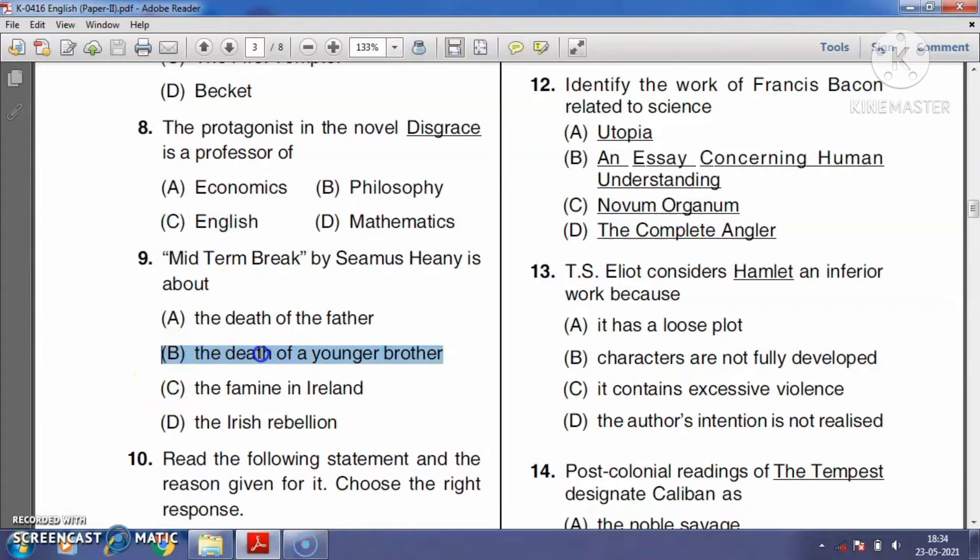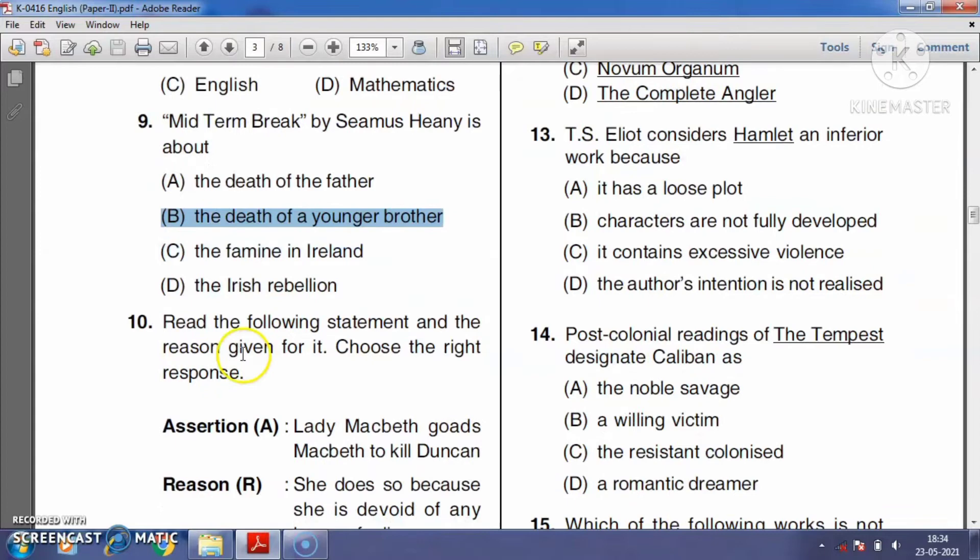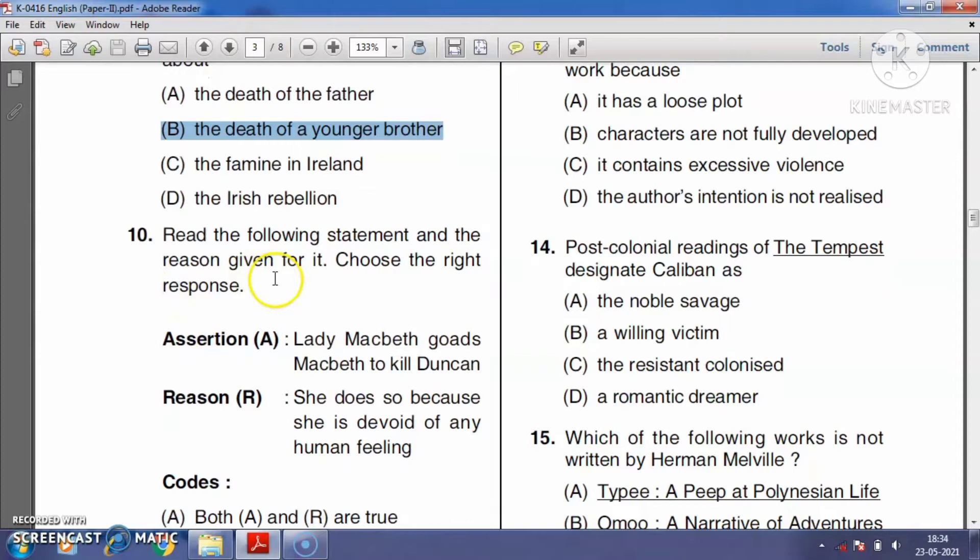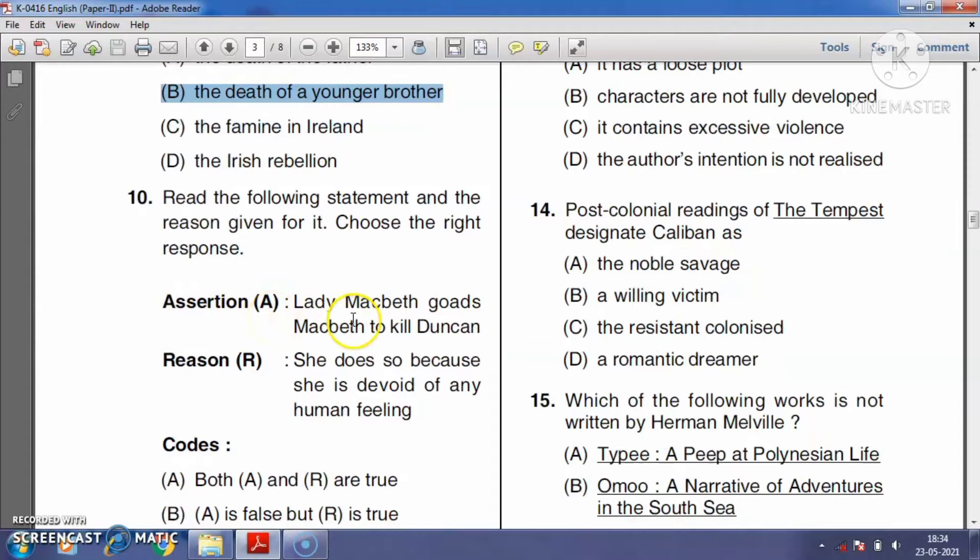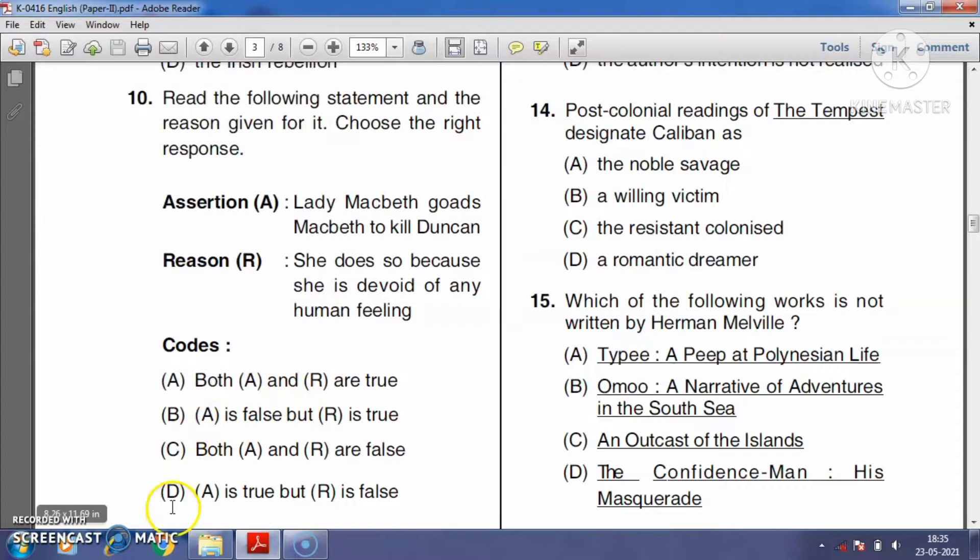Question number ten: Read the following statement and choose the reason given for it. Statement: Lady Macbeth goads Macbeth to kill Duncan. Reason: She does so because she is devoid of any human feelings. The right answer is option D: the statement is true but the reason is false.